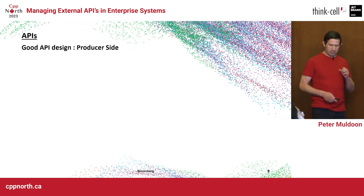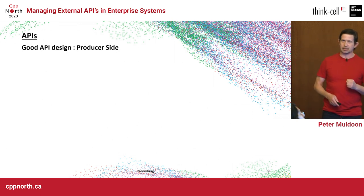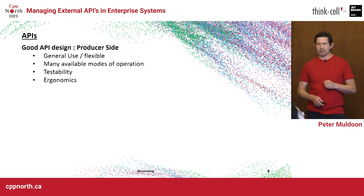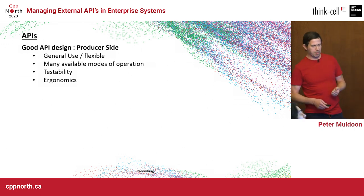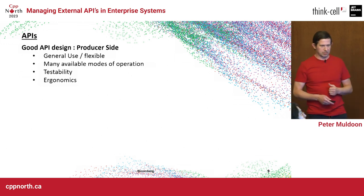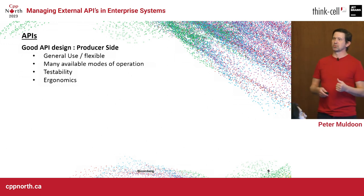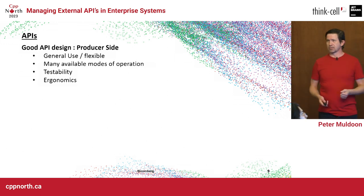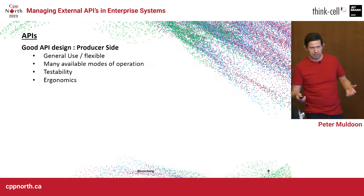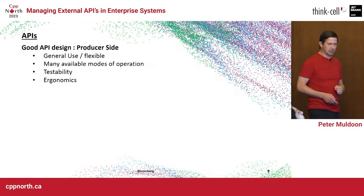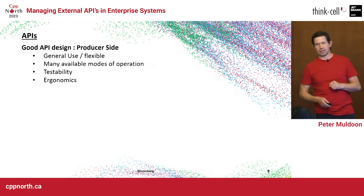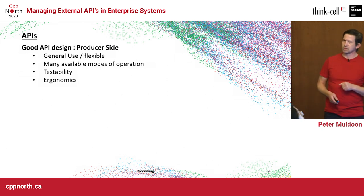When you're designing APIs, you're on the producer side — creating something for someone else. Key things I look for in an API: it has general use and flexibility, meaning it can be used in a wide variety of applications with many available modes of operation. That's because you want your software used widely. It also needs to be testable, have lots of dependency injection, and have good ergonomics — the phrase is: easy to use, hard to misuse.